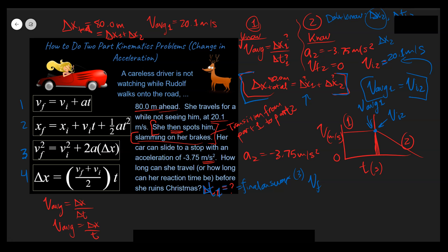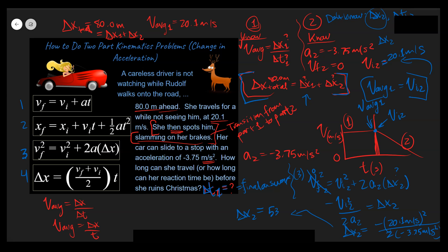Writing out equation 3 for Part 2: V final squared equals V initial squared plus 2·a2·delta x2. V final is zero here. Solving: delta x2 equals negative V initial squared divided by 2·a2. Substituting: that's negative (20.1)² divided by 2 times (negative 3.75). Delta x2 equals 53.8 meters.